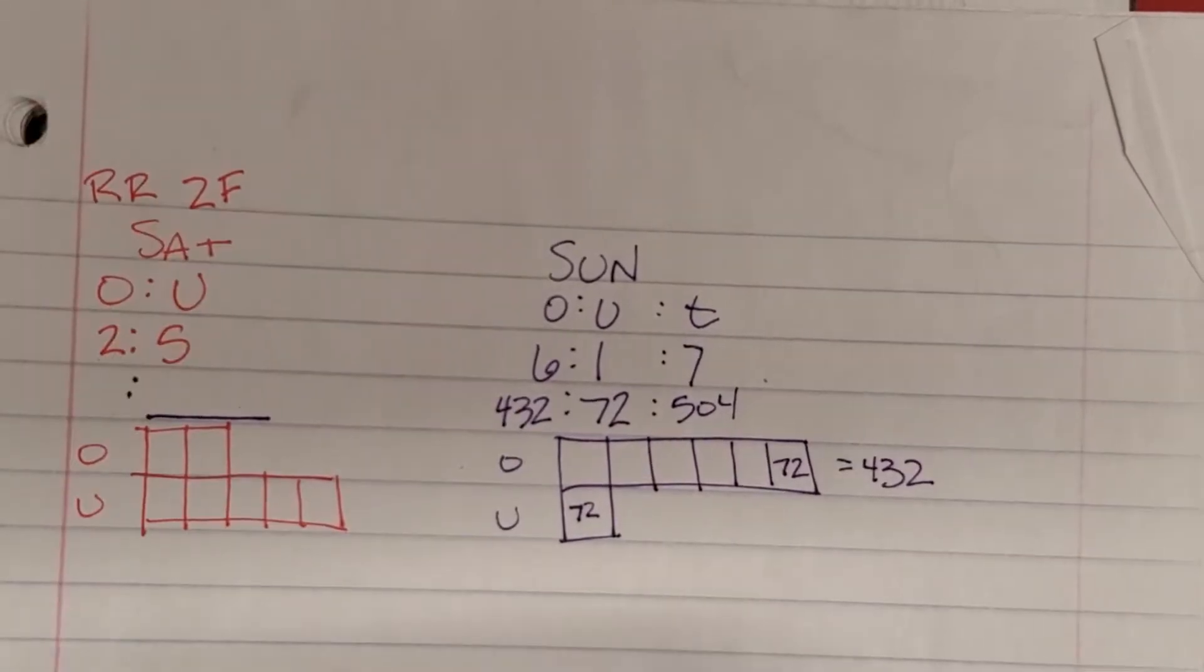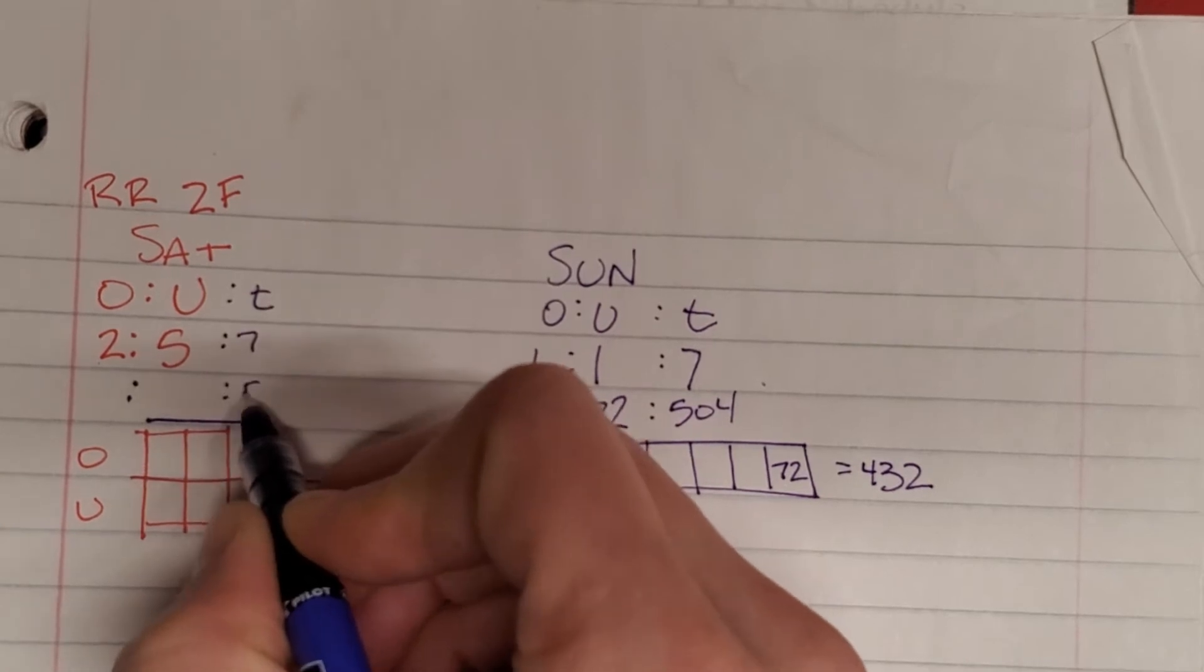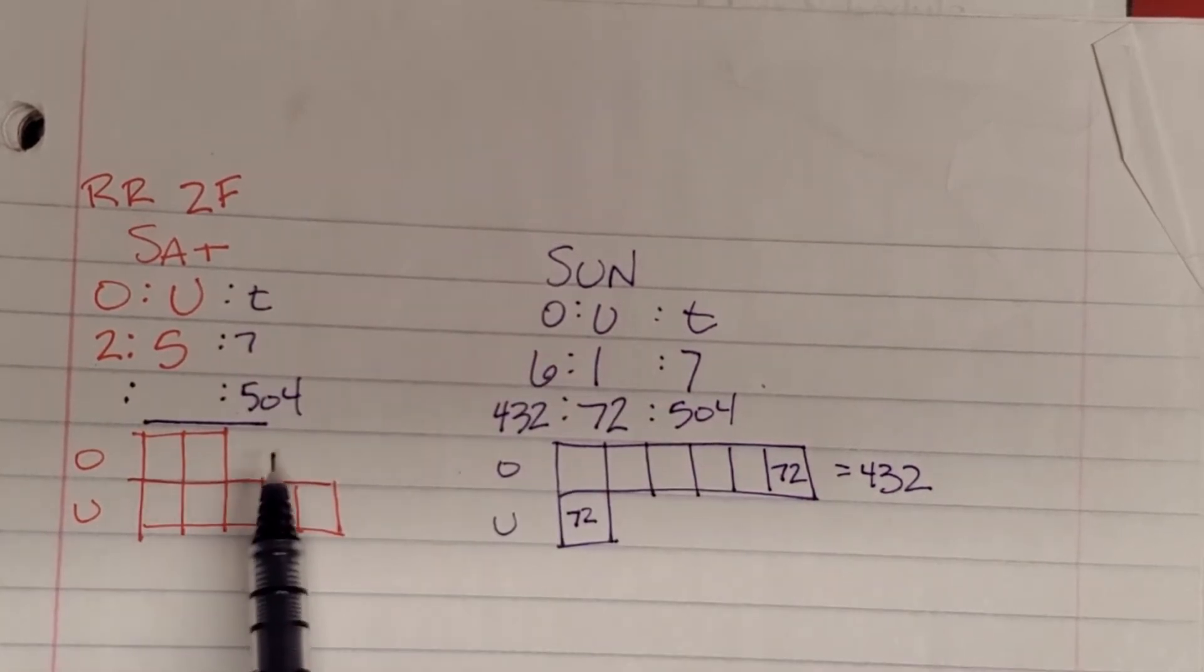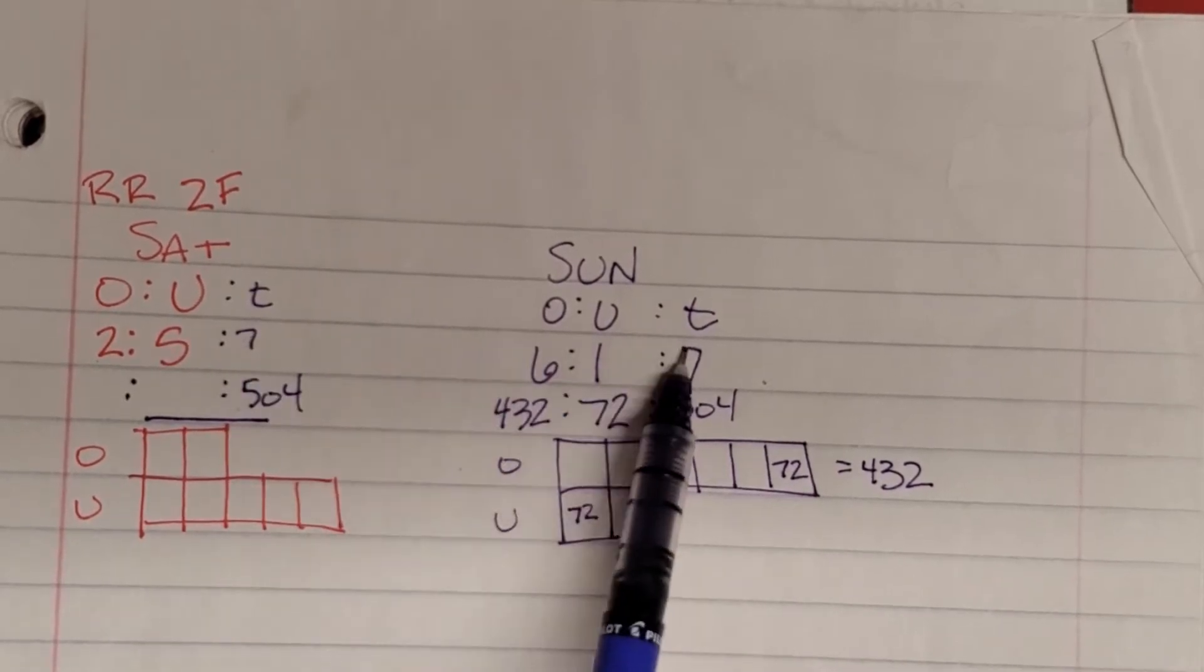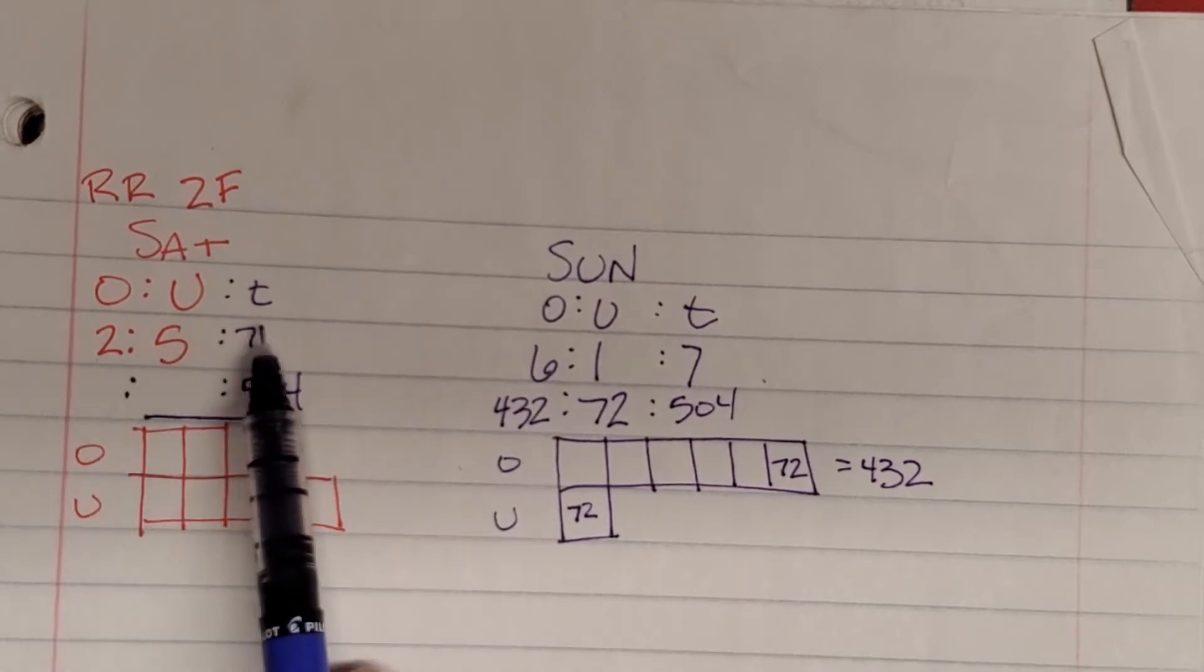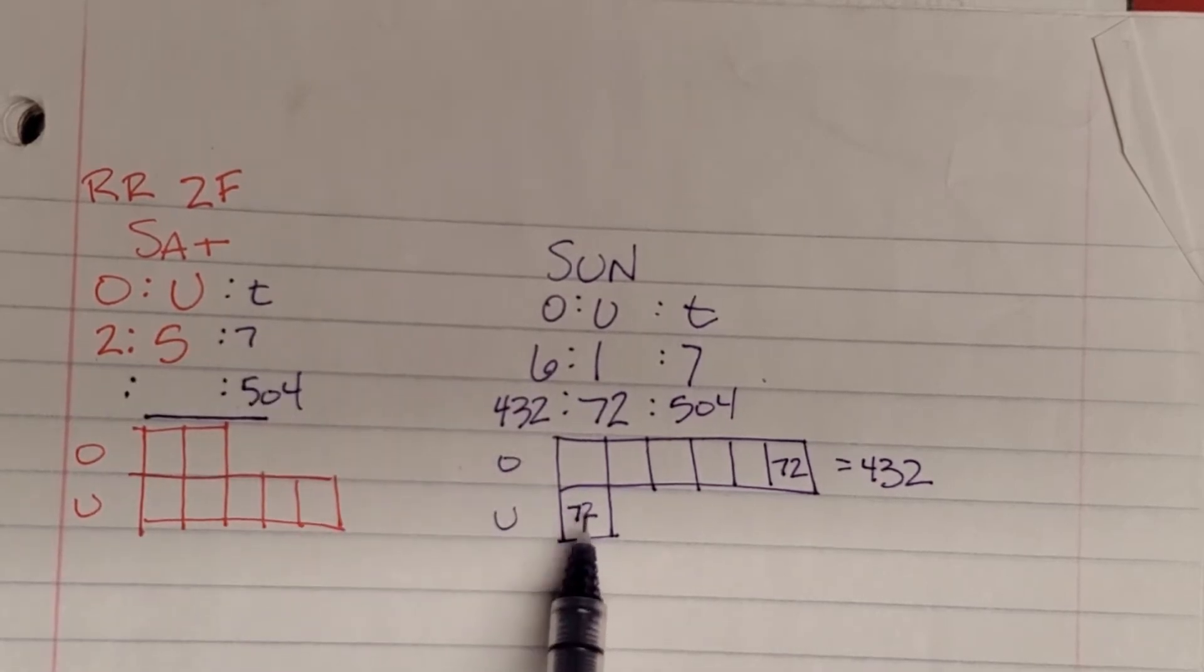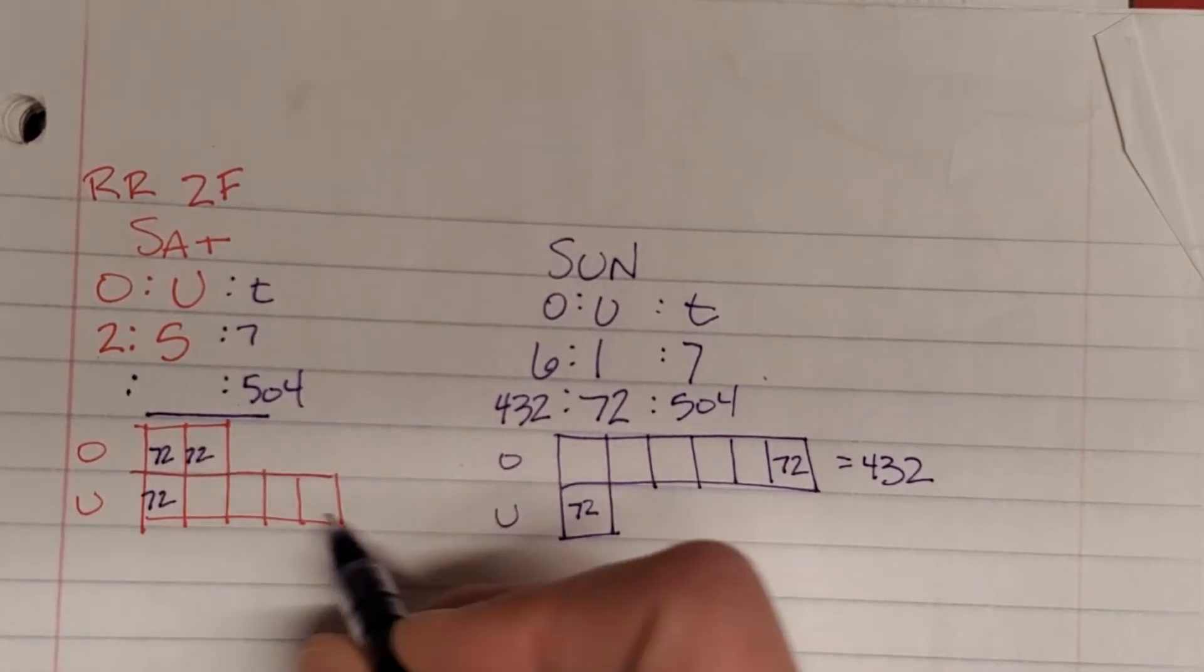Well, if there's 504 rooms in the hotel, there's 504 rooms in the hotel the night before. Okay. And notice these totals are the same because their ratios add up to the same number. We can use this same number in all of these boxes.